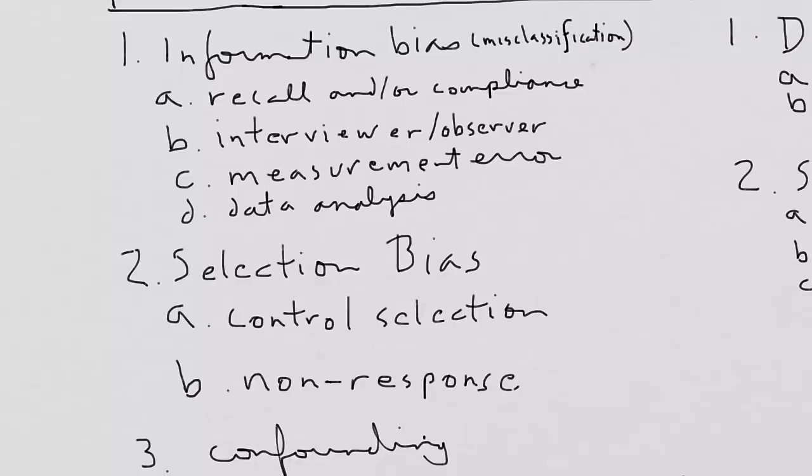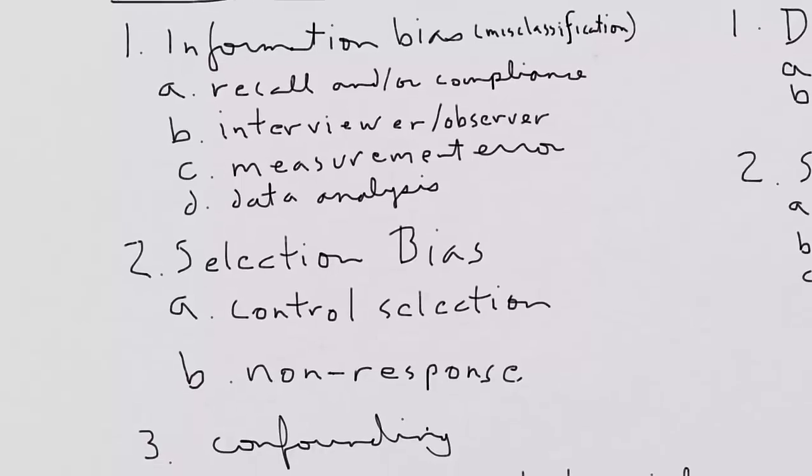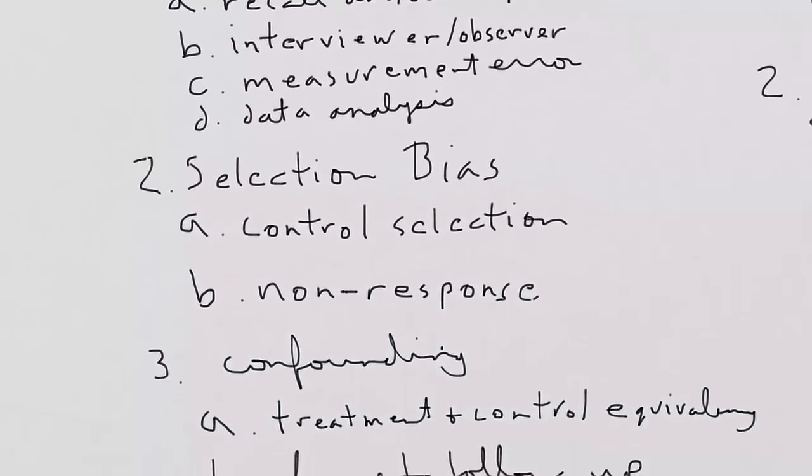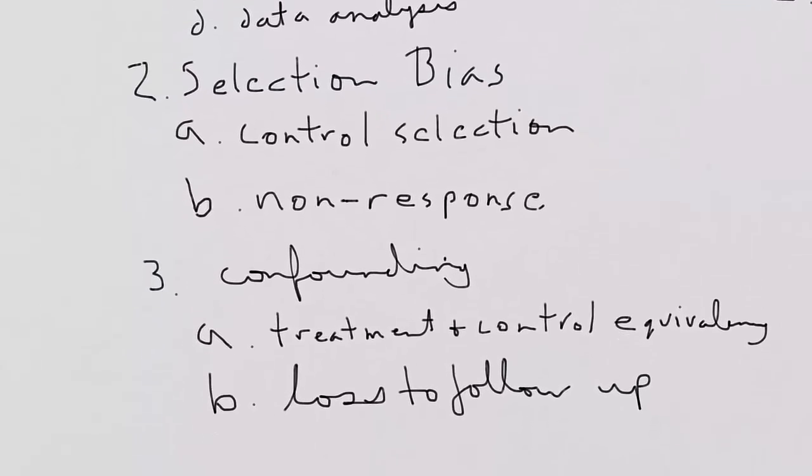Interviewer and observer bias has to do with, specifically in experiments, blinding or other ways that interviewers or observers may introduce bias by the way they ask questions or by the things they're looking for if they're observing. Measurement error I think is pretty clear, so if a machine or some kind of other means of measurement is in error. And data analysis I think is pretty straightforward. It could be the wrong data analysis for the job.